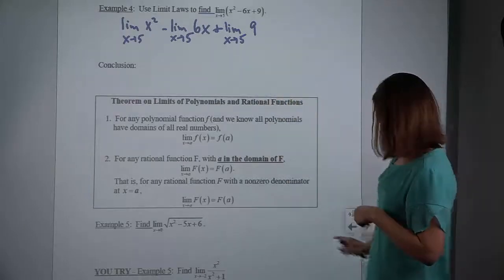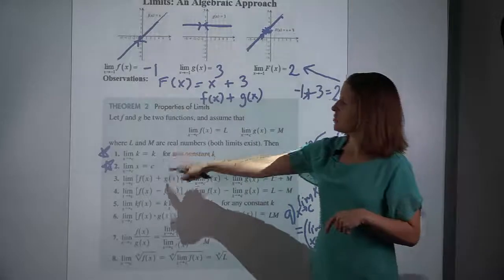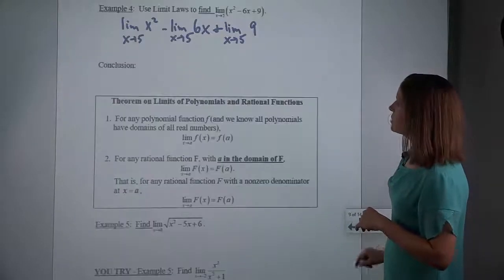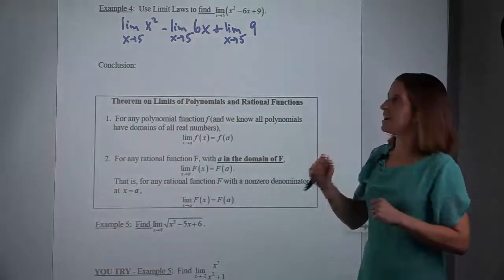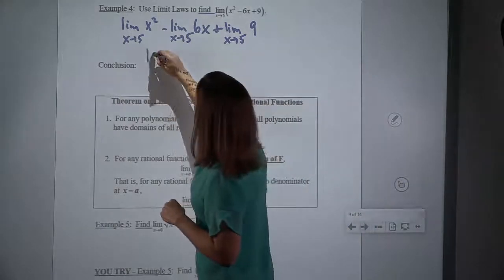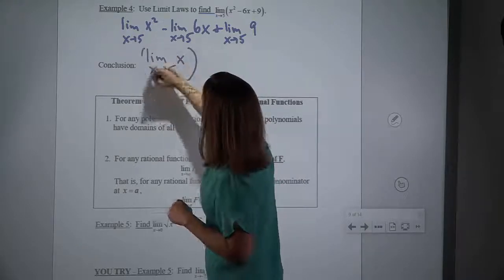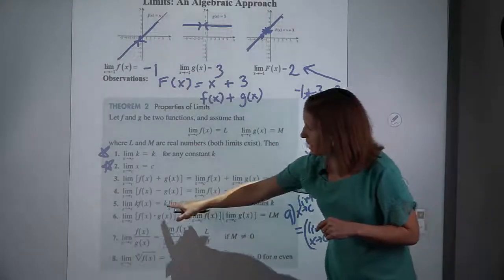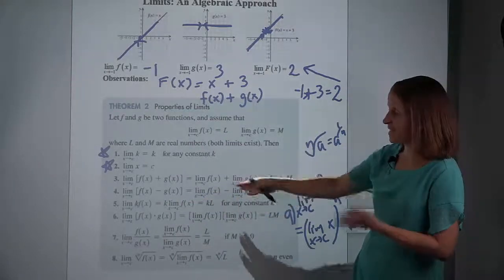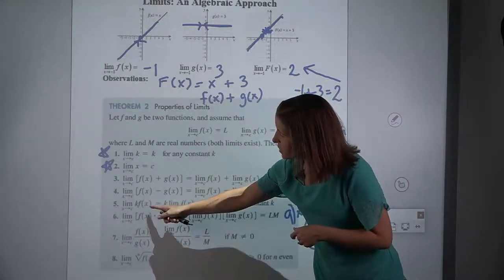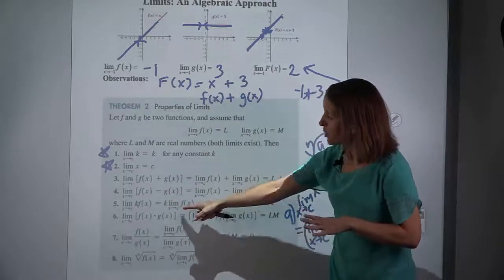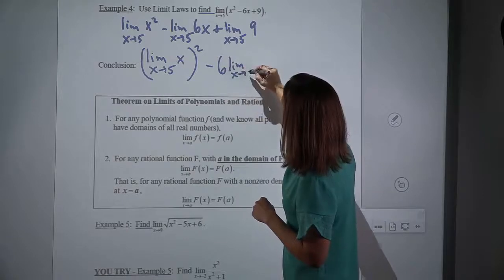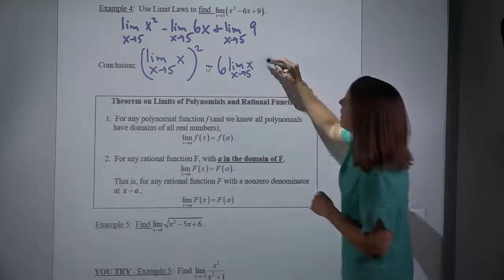This is already the last term, limit as x approaches 5 of 9 — already looks like one of the two starred ones that is our goal. But the first term has a power in it. That rule said that I can put the limit inside with the x and then raise it to a power. And then the middle term has a constant multiplied by it. This rule says that you can put the limit inside with the part that has x's in it and leave the 6 outside. So minus 6 times the limit as x approaches 5 of x.